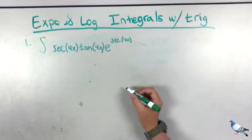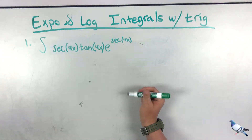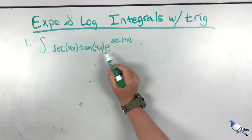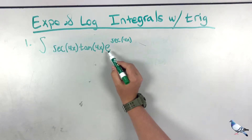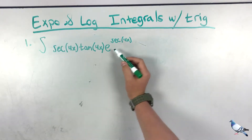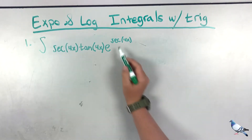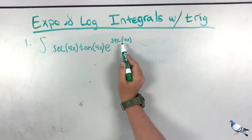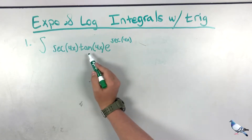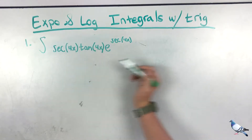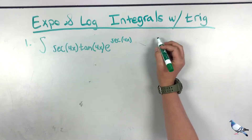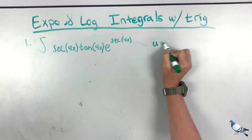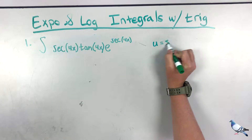First, we're going to find u. I want to get this in terms of u and just have e to the u to integrate. I know if I take the derivative of secant(4x) I'm going to get secant tangent, so my u is going to be secant(4x).